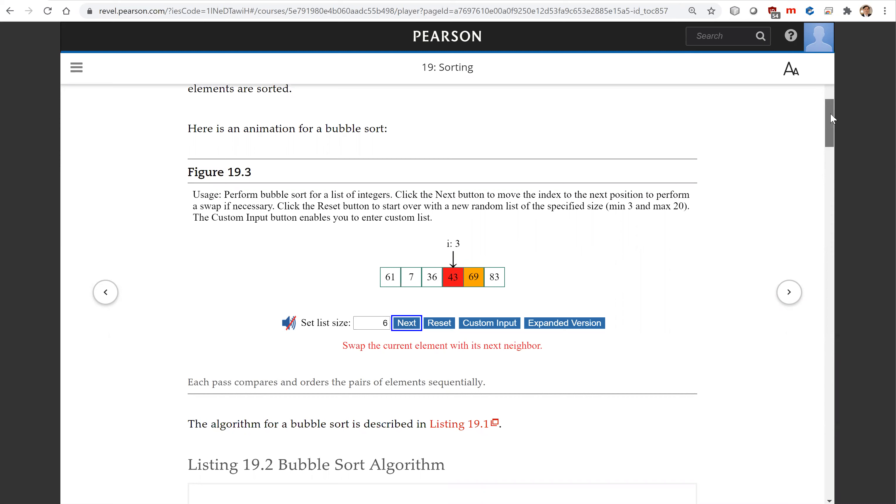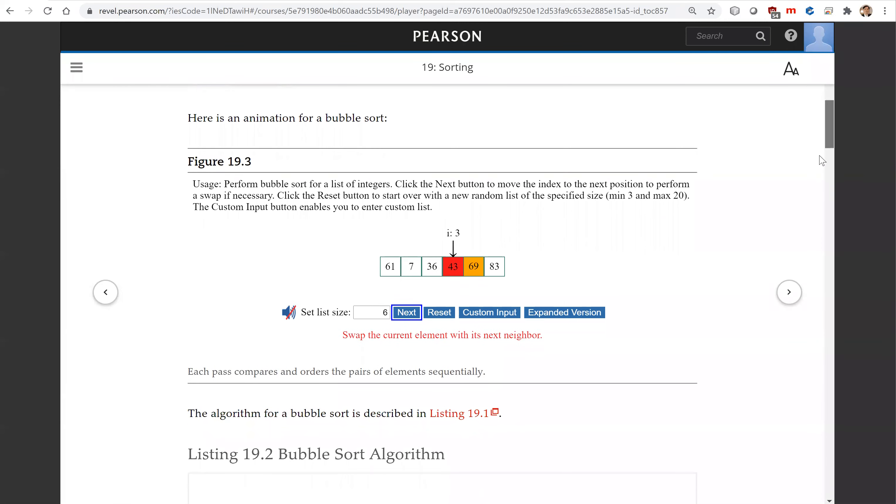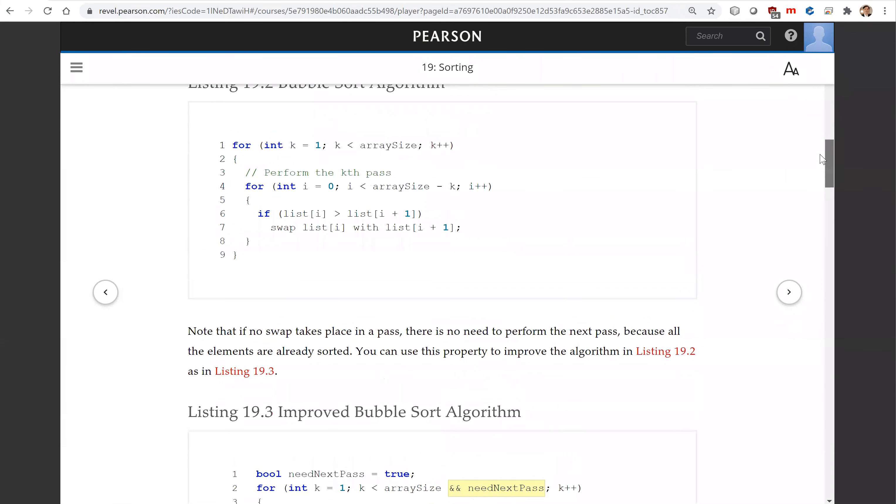So each pass is the order of n time. So the total is order of n square time for bubble sort. So this is the implementation for the bubble sort.